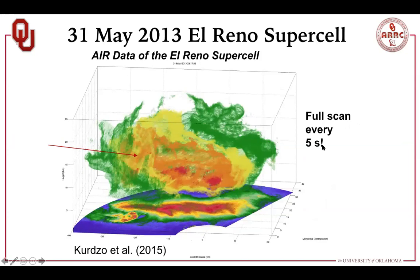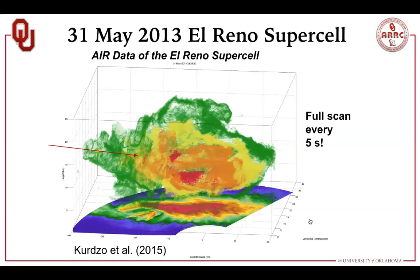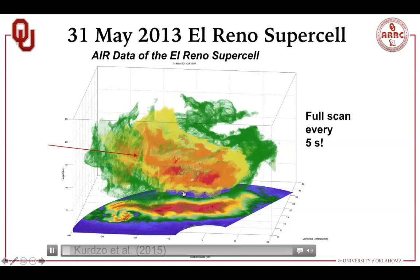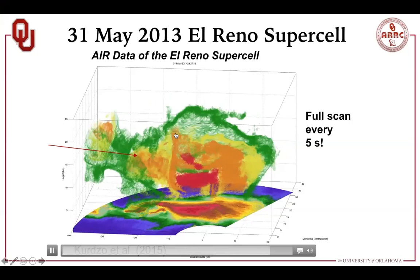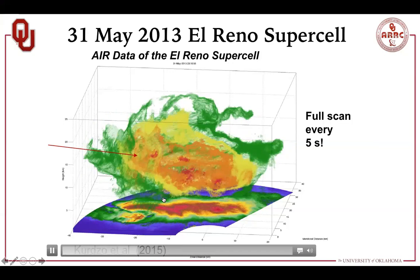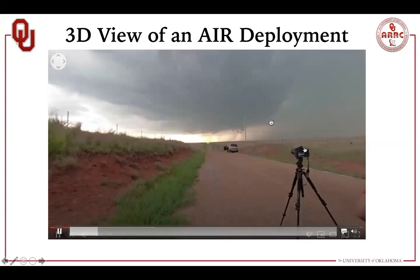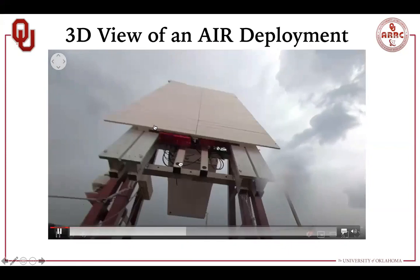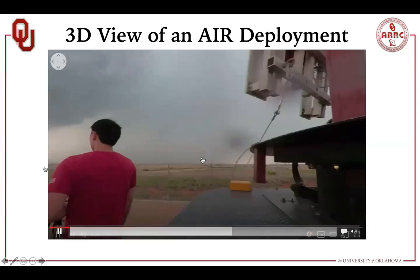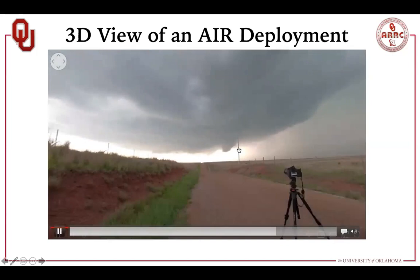This data was collected from the May 31st 2013 El Reno supercell using the AIR. We were relatively far from the storm, giving a nice view of the entire storm structure. You can see areas of red colors ascending rapidly in the storm's updraft — debris or precipitation ascending within this really intense tornado. This time-lapse video from one of our AIR deployments shows cloud motions and the AIR pedestal rotating back and forth. You can also see a wall cloud starting to develop in the distance in the time-lapse, with former student Martin Satrio on site.